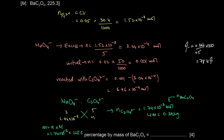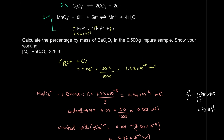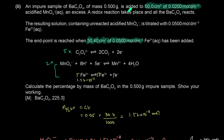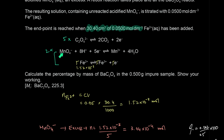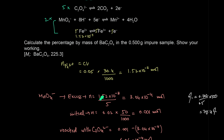To recap the method: ethanedioate reacted with excess MnO4⁻ (first reaction); remaining MnO4⁻ reacted with Fe2+ (second reaction). From the 1:5 ratio of MnO4⁻ to Fe2+, we found excess MnO4⁻. The total MnO4⁻ was 0.001 mol, so MnO4⁻ used in the first reaction was 0.001 minus the excess. From there we deduced moles of ethanedioate and percentage purity.